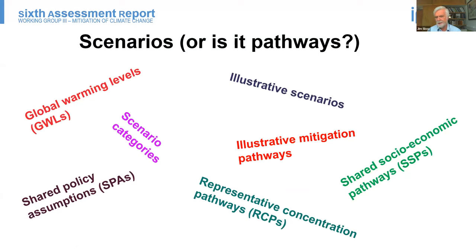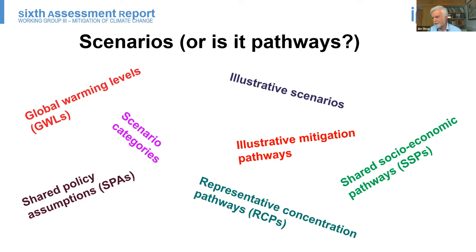This is a slightly provocative slide, the most borrowed slide I've ever produced. There's a very strong message from governments in IPCC: they would like to see a simple set of scenarios to help illuminate their policy choices. When we approved the Working Group 1 report in IPCC in this cycle, they reduced it to the ultimate level of simplicity — very low, low, intermediate, high, and very high scenarios. Scientists are also really interested because scenarios are a good integrating device for pulling together different scientific domains: physical sciences, mitigation, impacts, adaptation, and vulnerability.